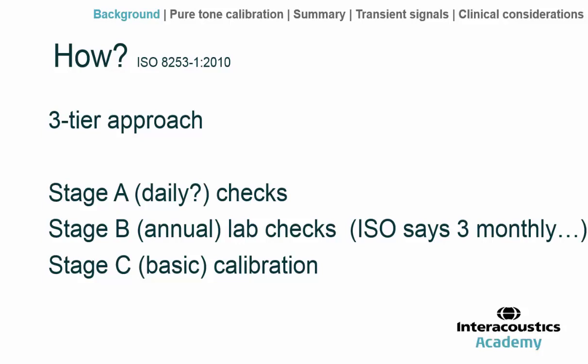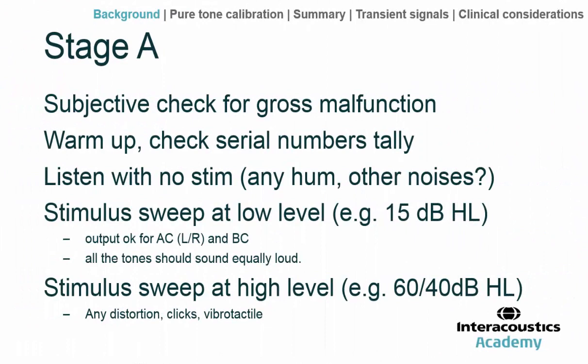Stage B checks might, on a pragmatic level, be performed annually, although international standards suggest three-monthly. Stage C is a very basic series of checks, getting down to the fundamentals of the instrument's workings, performed only once or a handful of times in the whole lifetime of the instrument. Stage A might involve a subjective visual inspection for any gross malfunction — any leads that have been disconnected or fraying.